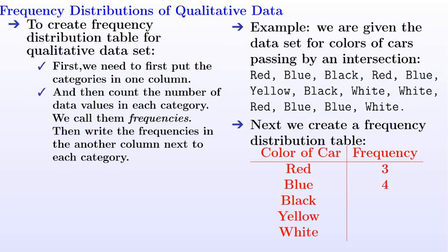There are two black cars, one yellow car, and three white cars that passed by the intersection. Now we have a completed frequency distribution table for a qualitative data set.